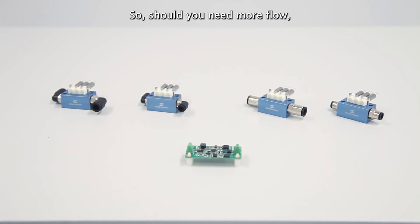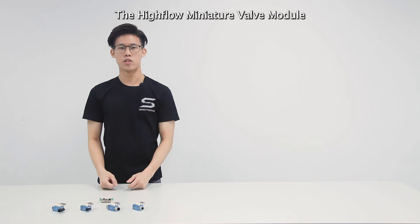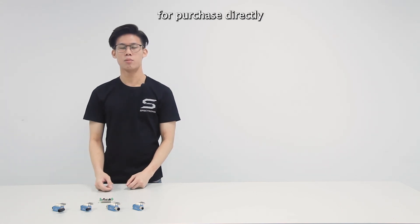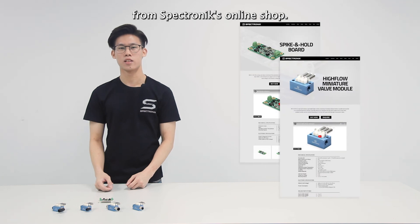So, should you need more flow, you can easily combine multiple modules in parallel. The high flow miniature valve module and spike and hold board are now both available for purchase directly from Spectronic's online shop.